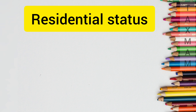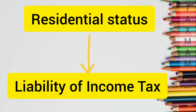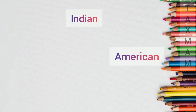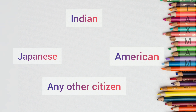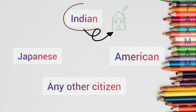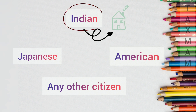That is why the first step in income tax computation is to calculate the residential status of a person. According to the residential status only, the person will be liable to pay tax to the government. Even though the person is Indian, American, Japanese, or any other nationality, if a person is a resident in India then the person should pay tax to the Indian government. That's why the residential status computation part is very important.